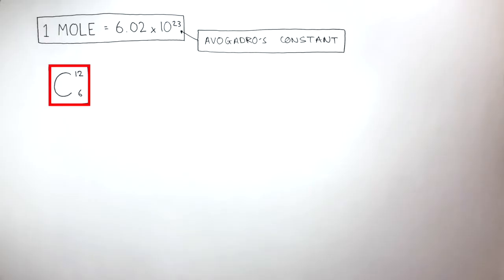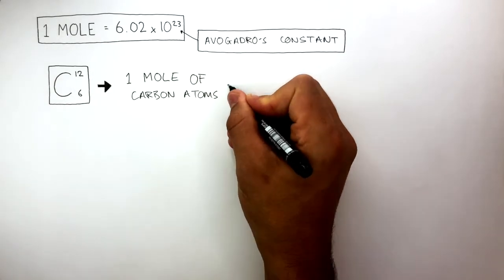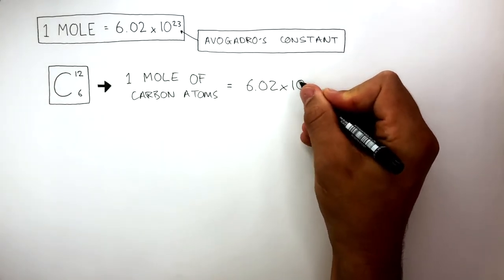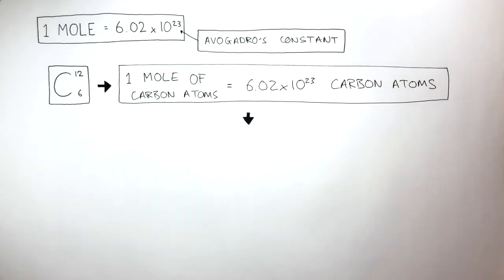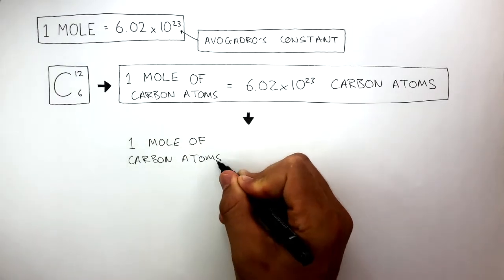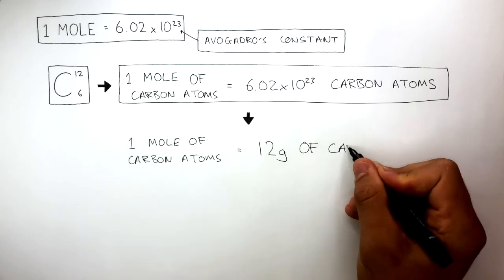We can see carbon has a relative atomic mass of 12, and we know that AR has no units. We also know 1 mole of carbon atoms is equal to 6.02 times 10 to the power of 23. The incredibly fascinating part is that when you have 1 mole of carbon atoms, this equals 12 grams of carbon.